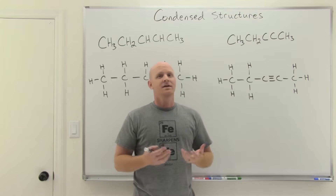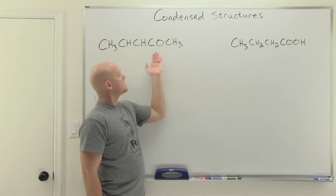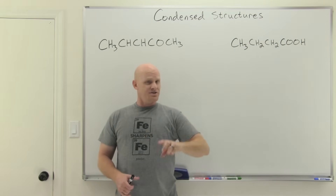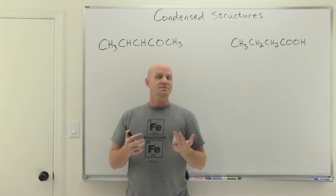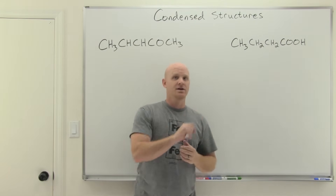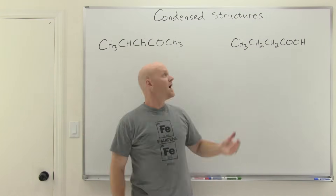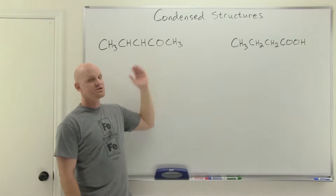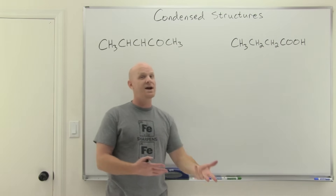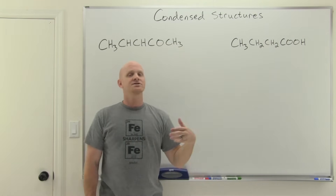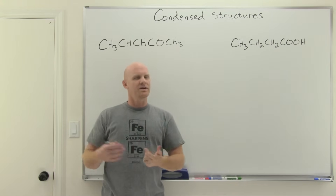Oxygen is a common atom in organic molecules. Neutral oxygen typically makes two bonds, which means it can go in the middle of a chain — unlike halogens or hydrogen, which make only one bond and can't be in the middle. The tricky part is that a condensed structure won't explicitly tell you if oxygen is in the middle of the chain or a branch off it. The default is to try oxygen in the middle of the chain, but if atoms end up not getting their filled octets, that's a sign oxygen should be a branch instead.